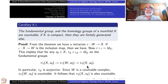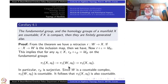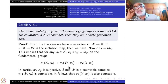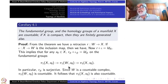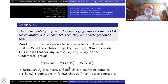Suppose X is compact. Then we have seen that W can be chosen to be a finite CW complex. Therefore its one-skeleton is finite, and therefore there are only finitely many generators. Since R-star is still surjective, π₁(X) will also be finitely generated.